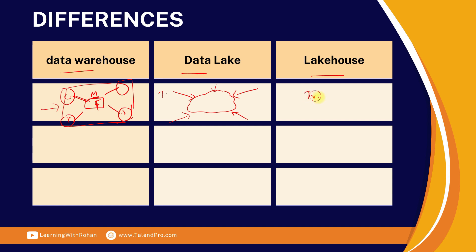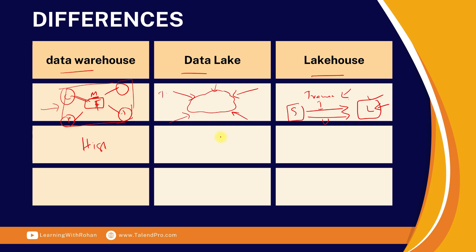The lakehouse is more transactional in nature. Assume there is a source application with a lakehouse built on top — as soon as there is an insert or an update on the source, that data will be loaded and updated in the lakehouse. So it's more transactional in nature and it reflects the true image of the source system. This is the primary understanding.